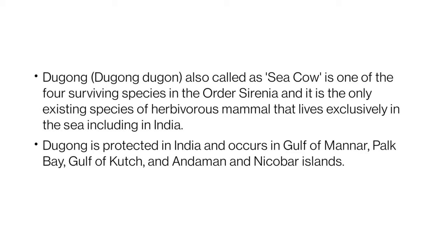The dugong is the only existing species of herbivorous mammal that lives exclusively in the sea. Dugong is protected in India and occurs in the Gulf of Mannar, Palk Bay, Gulf of Kutch, and Andaman and Nicobar Islands.